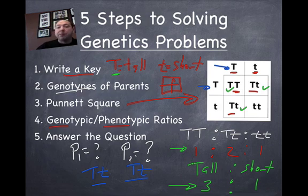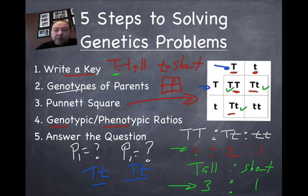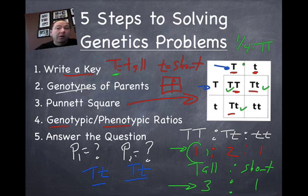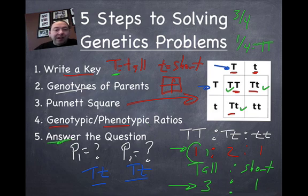We can also express these ratios as probabilities. What is the probability of getting a homozygous tall plant? We can look here and see one out of four — so the probability of getting big T, big T is one out of four. What's the probability of getting any kind of tall plant? That would be three out of four. The reason I always tell my students to save answering the question for last is that once you work out all the genotypic and phenotypic ratios, there's not too many things that you can get tricked on.